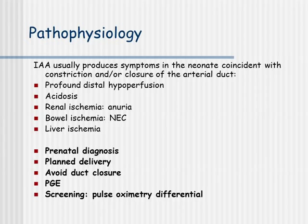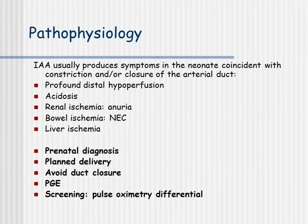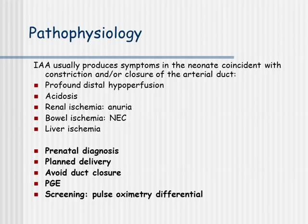Interrupted aortic arch usually produces symptoms in the neonate, coincident with the constriction or closure of the arterial ducts. As a consequence, we have profound distal hypoperfusion leading to acidosis and renal, bowel, and liver ischemia. Therefore, prenatal diagnosis is of very high importance, so that we can plan the delivery and avoid duct closure by starting prostaglandin infusion. Children not diagnosed prenatally are screened with differential pulse oximetry, and the diagnosis can be made based on that.